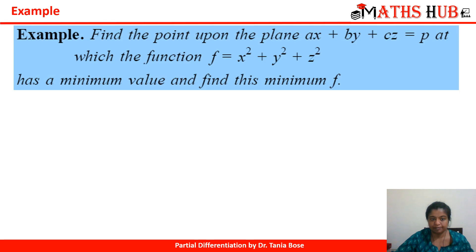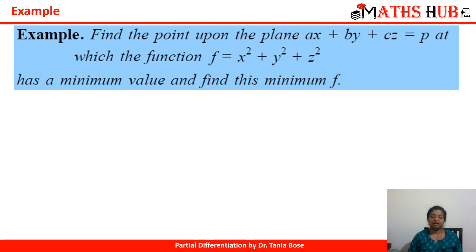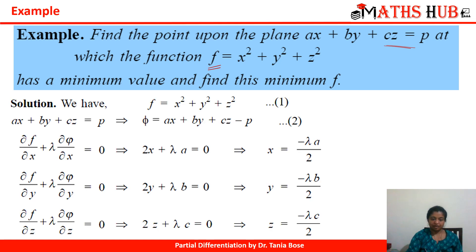Let's try this example: find the point upon the plane ax + by + cz = p at which the function f = x² + y² + z² has a minimum value, and find this minimum value. The function to be minimized is f = x² + y² + z². The constraint is ax + by + cz = p, which we write as g = ax + by + cz − p.